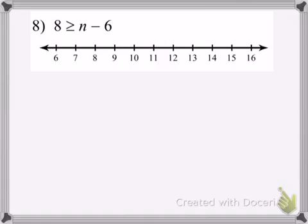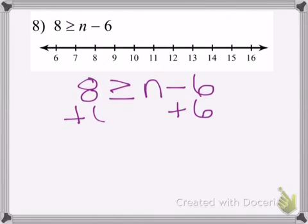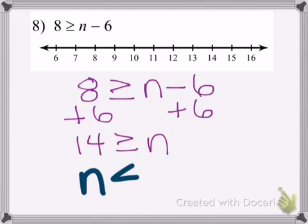And our final example says 8 is greater than or equal to n minus 6. And we will be adding 6 to both sides to get 14, bring down greater than or equal to n. Now here's the only thing, the n is on the wrong side. So let's think about this. If 14 is greater than, then n has to be less than or equal to 14. You just take whatever symbol it is and reverse it.